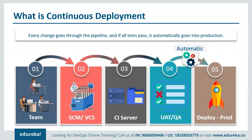To summarize in a single line: in continuous deployment, there's no release approval, no change approval board — the code moves automatically from the developer side to the production side, which is not the case in continuous delivery. It's really evident that we should not always use continuous deployment, as we need to consider many factors before releasing software — channel and supplier support, trade shows, market events, and compliance demands. But we must do continuous delivery so that we have the capability to deliver software to any given environment at any time as needed.